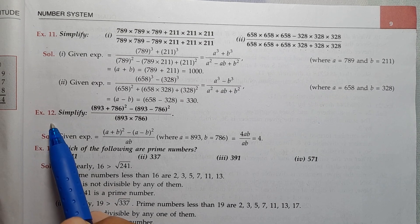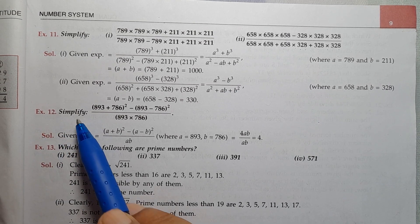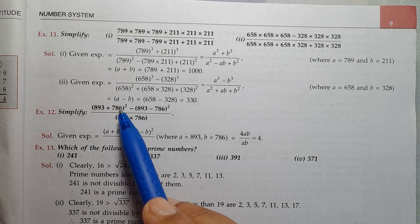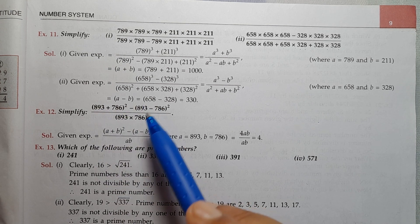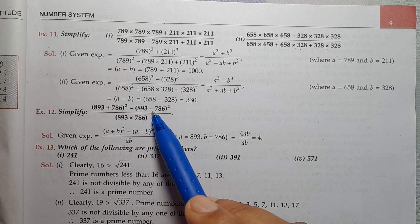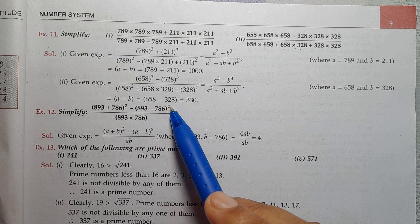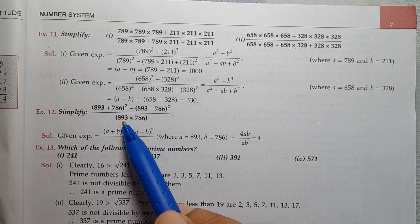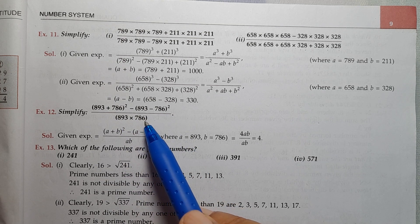Example 12: Simplify (893 + 786)² minus (893 - 786)² whole divided by 893 into 786.